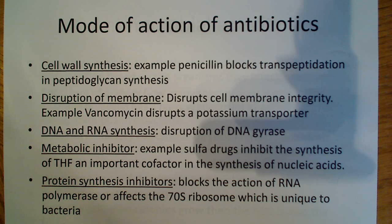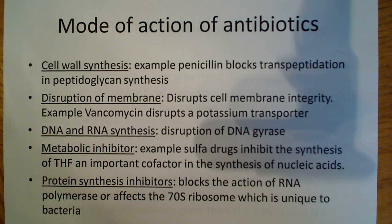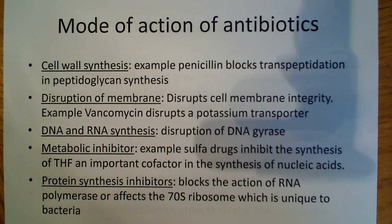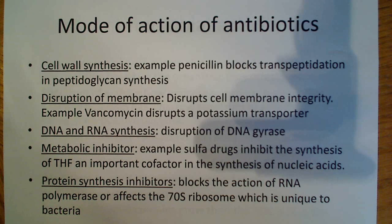Protein synthesis is another target. Eukaryotic cells have the 80S ribosome, while prokaryotes have the 70S ribosome, so you can block the action of RNA polymerase or affect the 70S ribosome. Prokaryotes have a much simpler RNA polymerase than eukaryotes, making it a perfect target. Both the prokaryotic RNA polymerase and the 70S ribosome are unique to bacteria, so antibiotic drugs targeting them won't harm human cells.